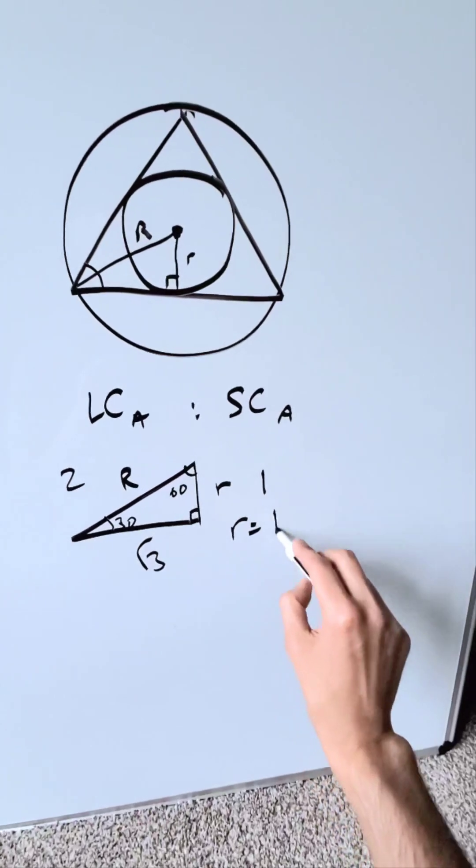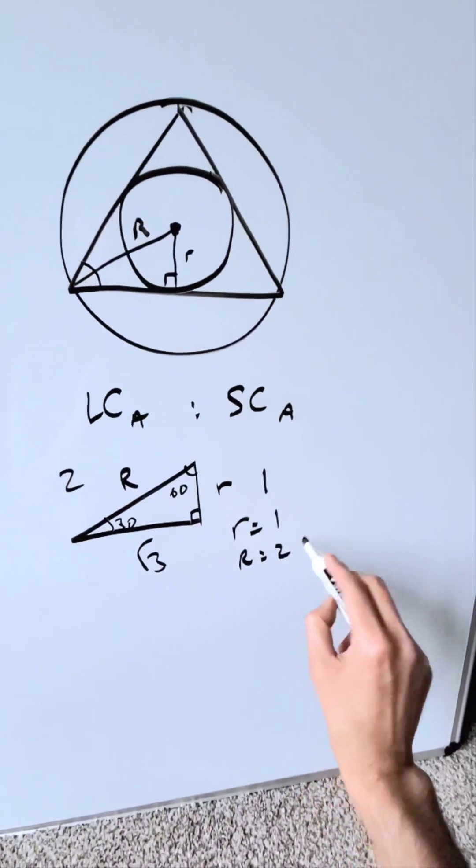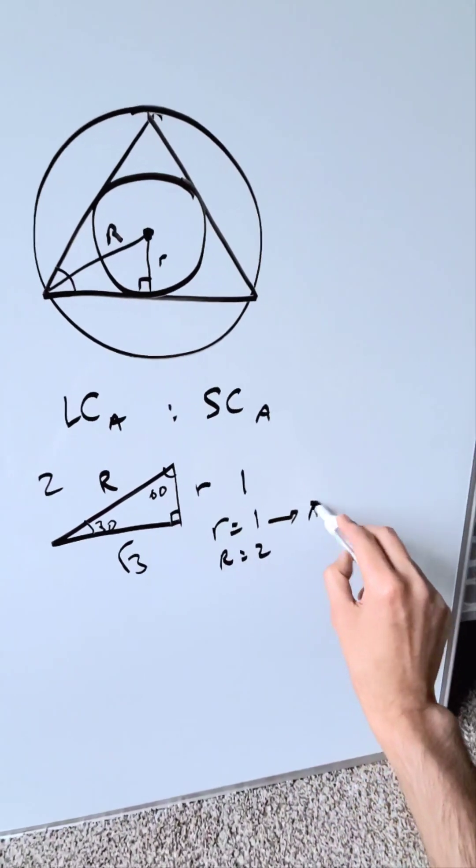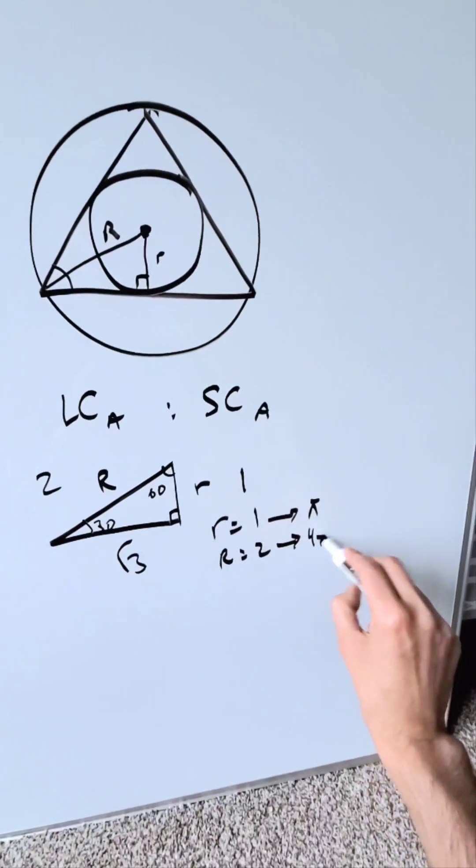Now I clearly see the small radius is equal to 1. The large radius is equal to 2. The area of the small circle must be pi. The area of the large circle must be 4 pi.